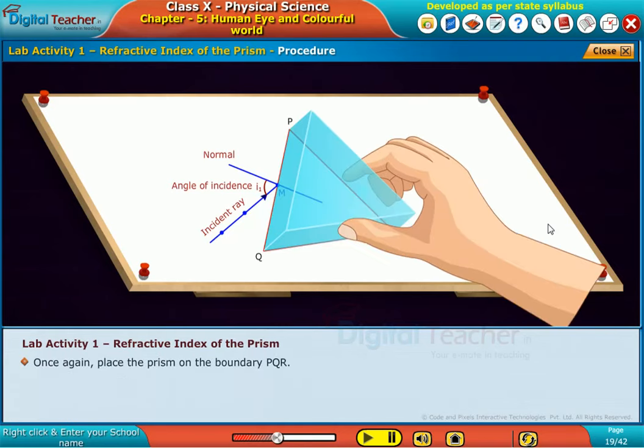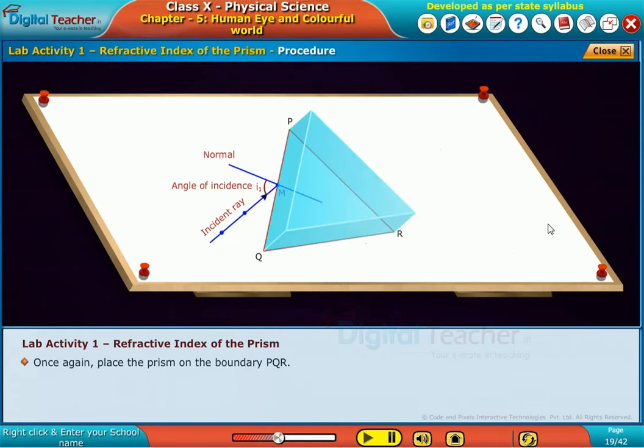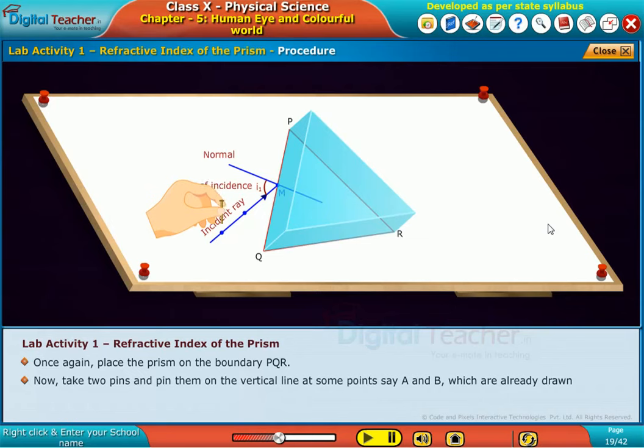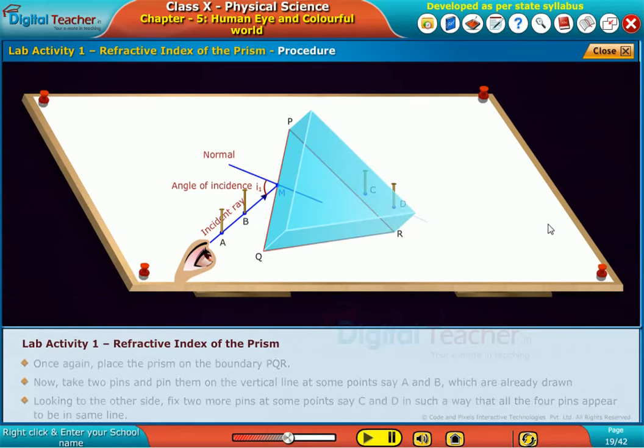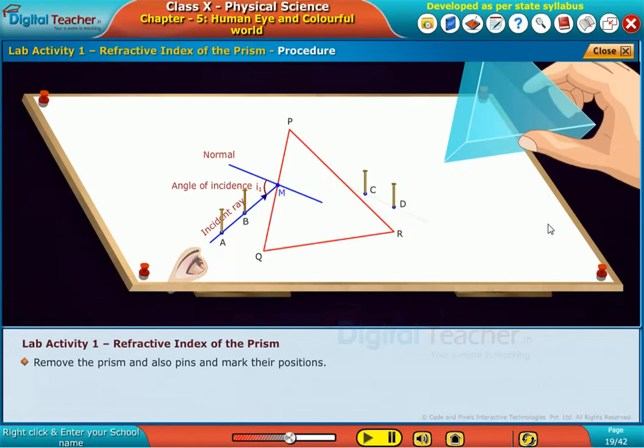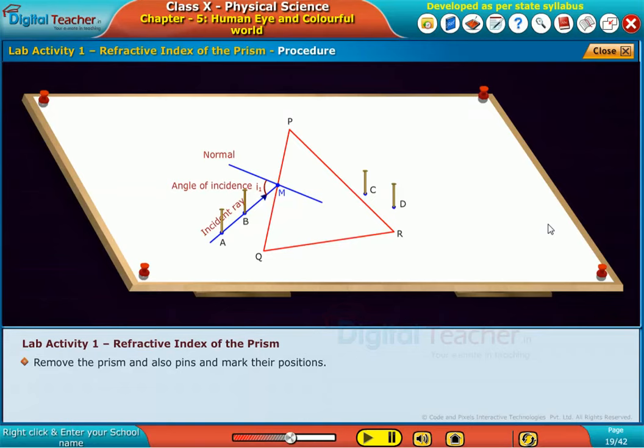Once again, place the prism on the boundary P Q R. Now, take two pins and pin them on the vertical line at some points, say A and B, which are already drawn. Looking to the other side, fix two more pins at some points, say C and D, in such a way that all the four pins appear to be in same line. Remove the prism and also pins and mark their positions.